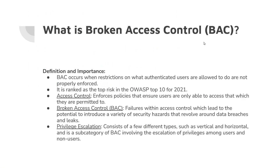So what is broken access control, otherwise known as BAC? Broken access control occurs when restrictions on what authenticated users are allowed to do are improperly enforced. In a nutshell, it's making sure that you can only do what you're permitted to do — making sure that a normal user can't do what an admin can do, but an admin can do what they need to do, such as creating or deleting users. Broken access control was ranked as a top risk in the OWASP Top 10 for 2021. So before we get into broken access control, it's best to know what access control itself is.